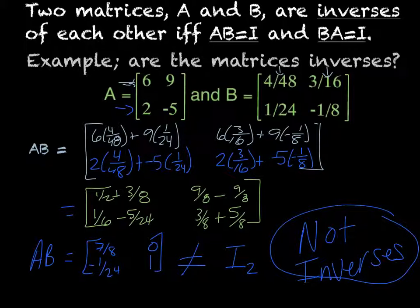If it did equal the I2 matrix, then that would mean that we would have to try B times A. But in this case, because we already know they're not, we don't have to.